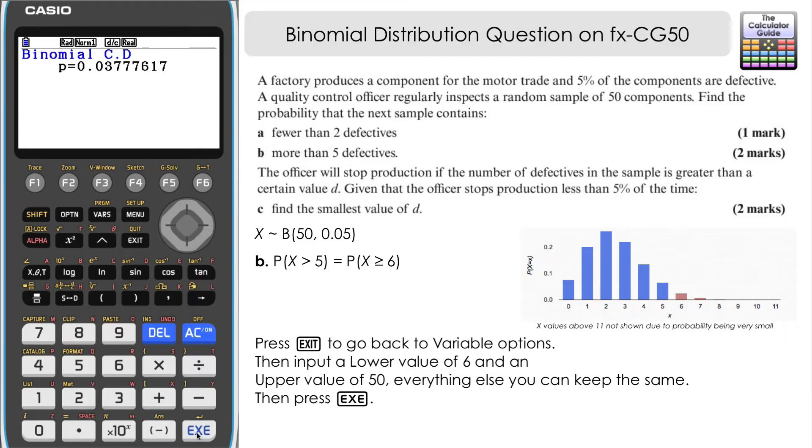So if we press execute, here we have a probability 0.0378 to four decimal places. So it's actually quite unlikely, less than a 4% chance that you're going to have more than five defective components.